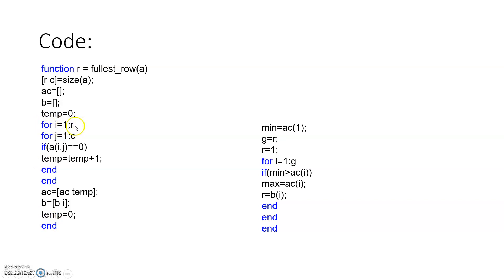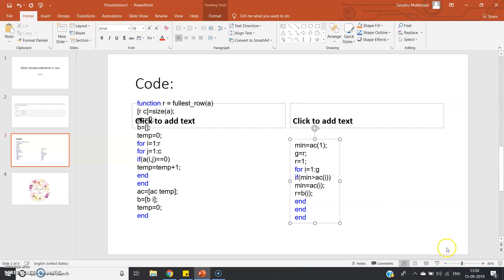After execution of this part, the b variable will store each row number, and ac will store the corresponding total number of zeros for each row. Then we find the minimum number of zeros: min = ac(1), d = r to get the total number of rows, and r = 1. For i = 1 to g (total rows): if min > ac(i), then min = ac(i). This updates the min variable as we iterate.